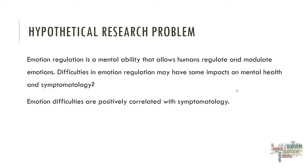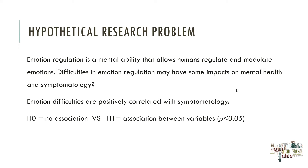Our null hypothesis is that there is no association between emotional difficulties and symptomatology. Our alternative hypothesis (H1) is that we find some association between these variables. Of course, what we are expecting here is to reject the null hypothesis, which is the rejection of an absence of an effect. Now let's jump to SPSS.